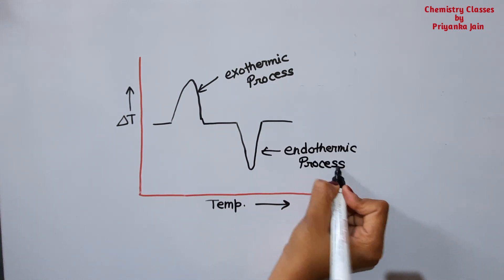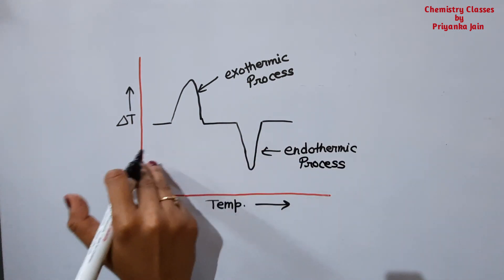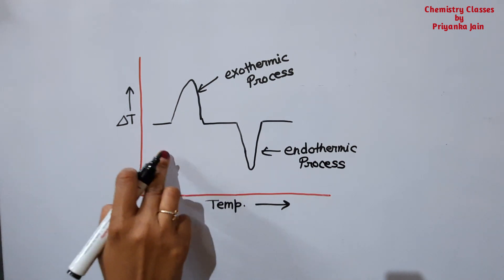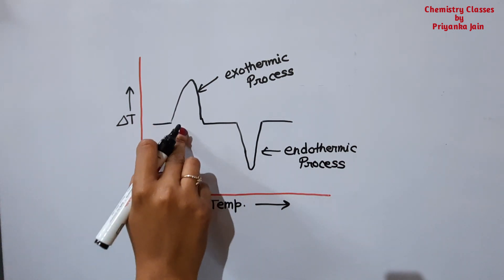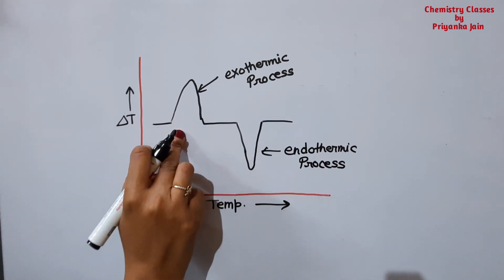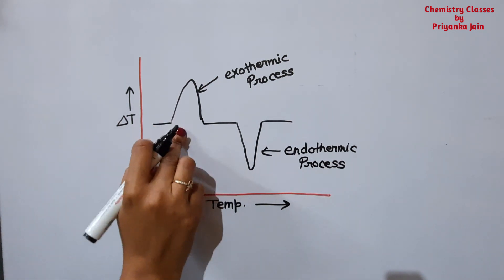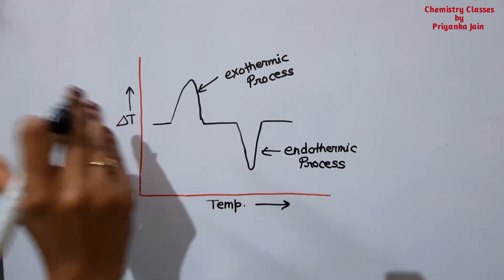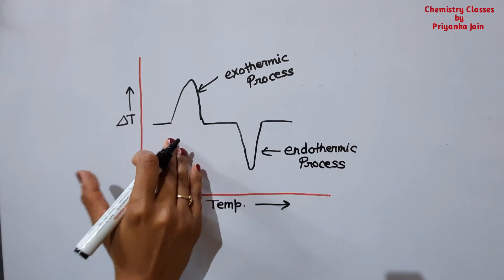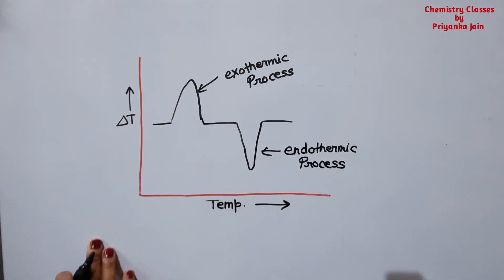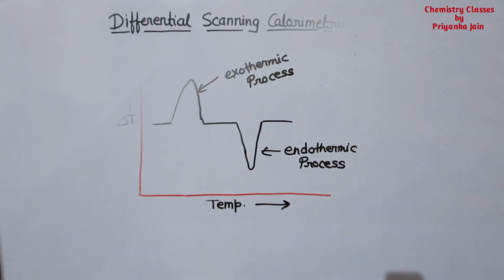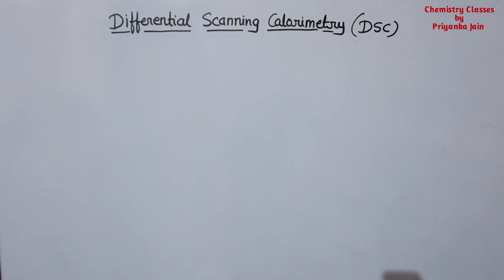In this way we get the peaks, and by the area of the DTA peak we can find out the enthalpy changes. So this curve is also used for finding out the change in enthalpy.